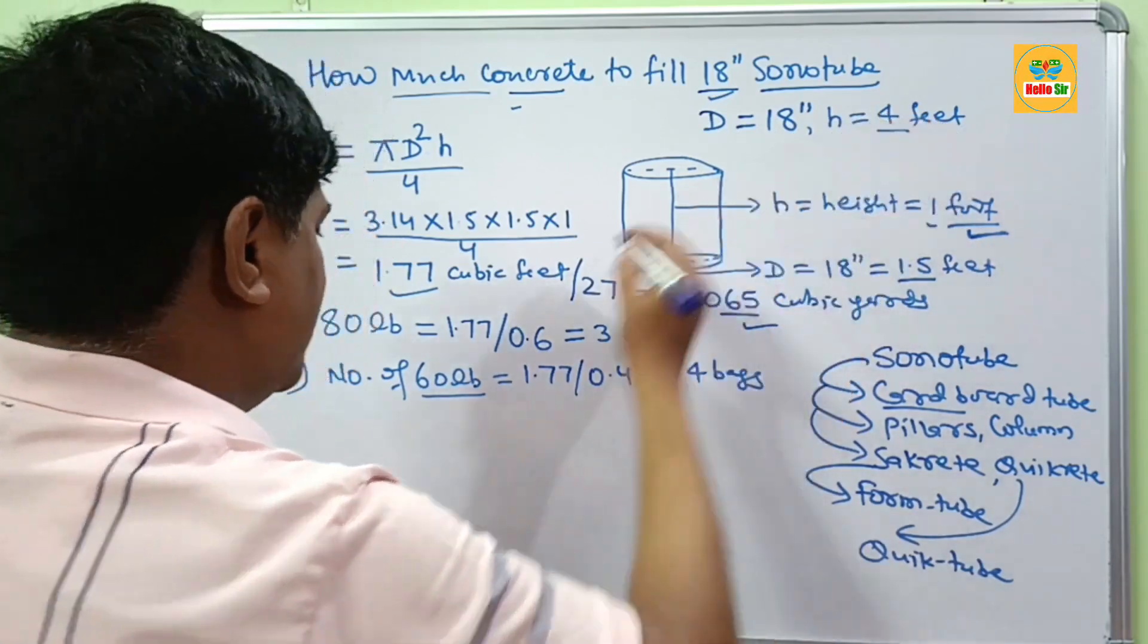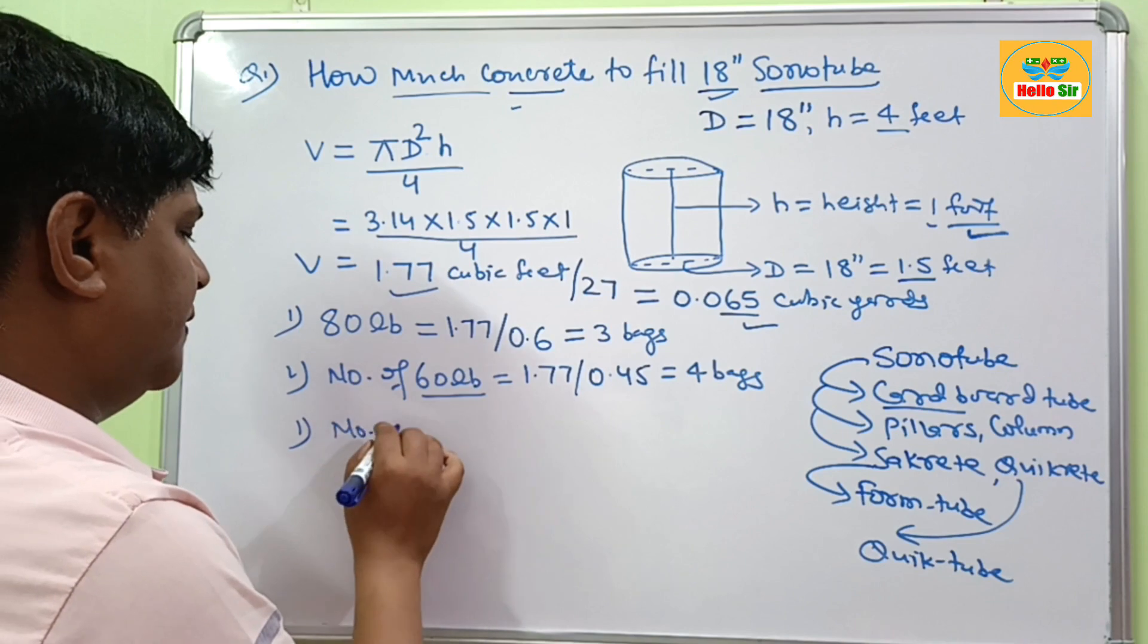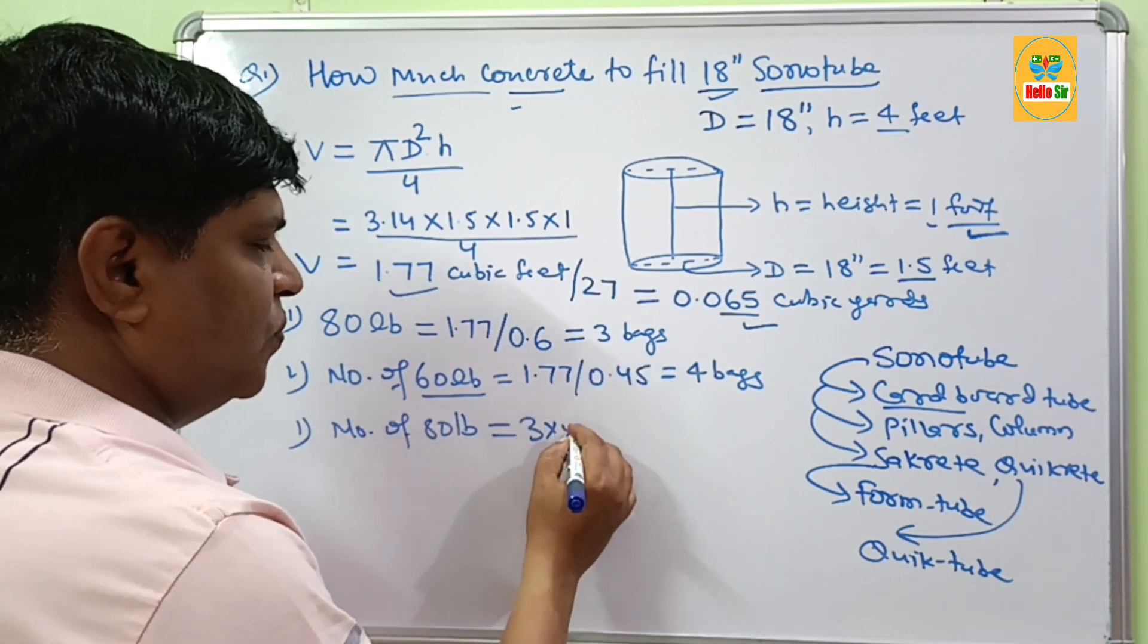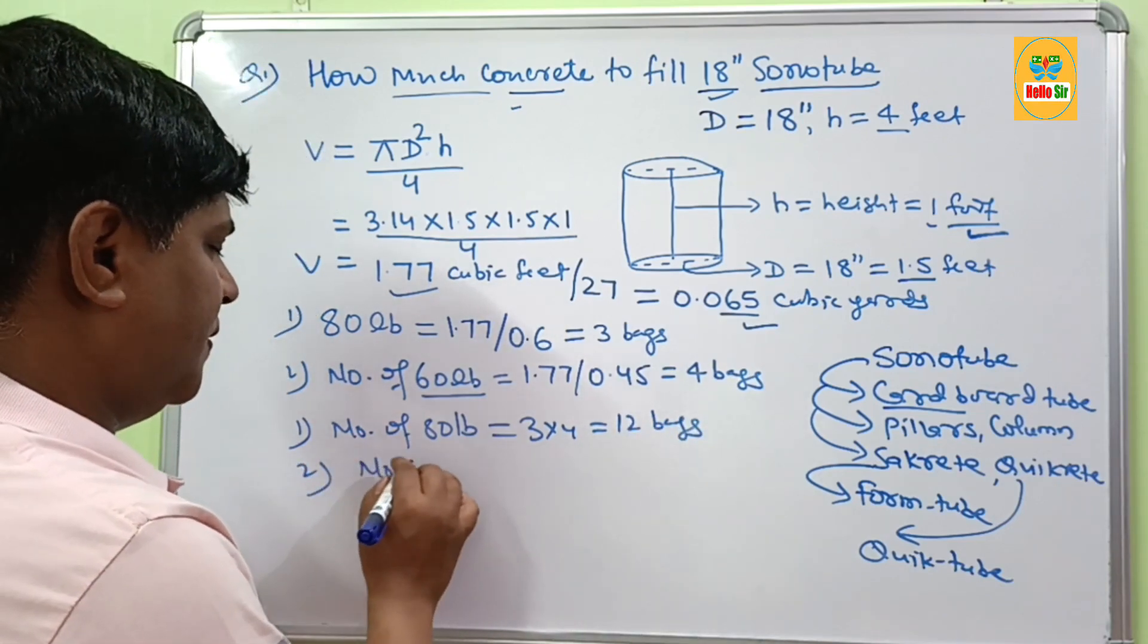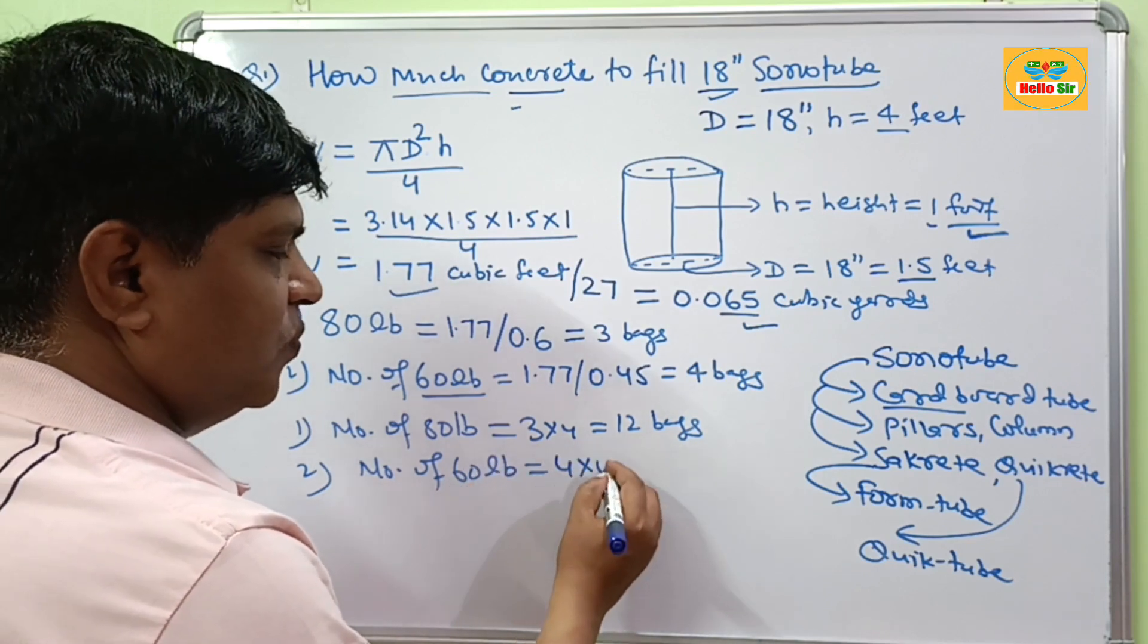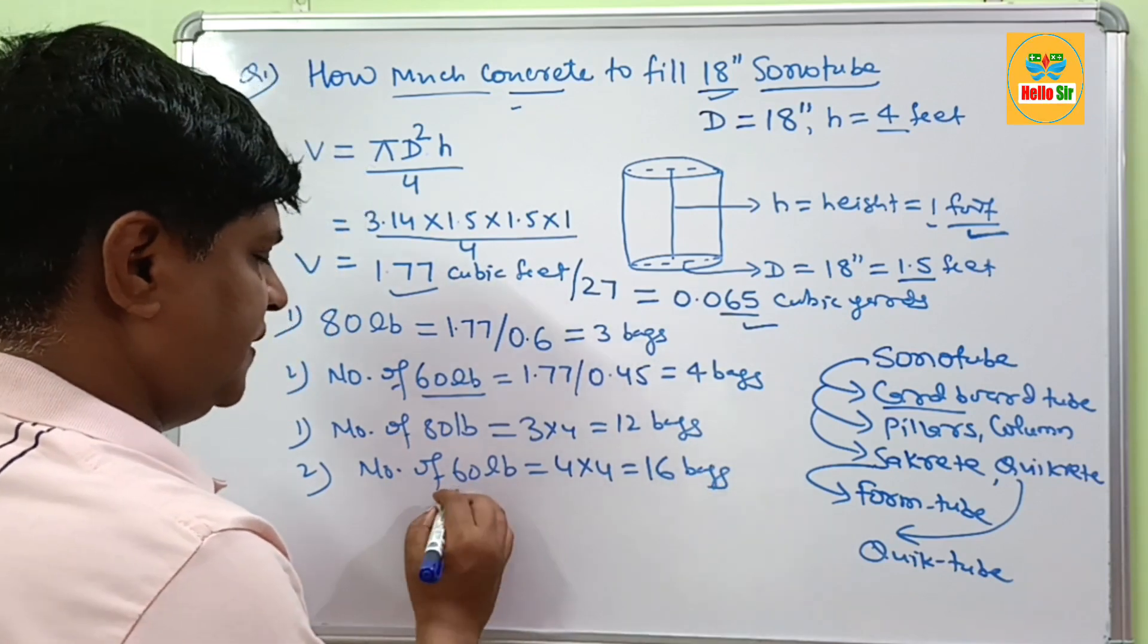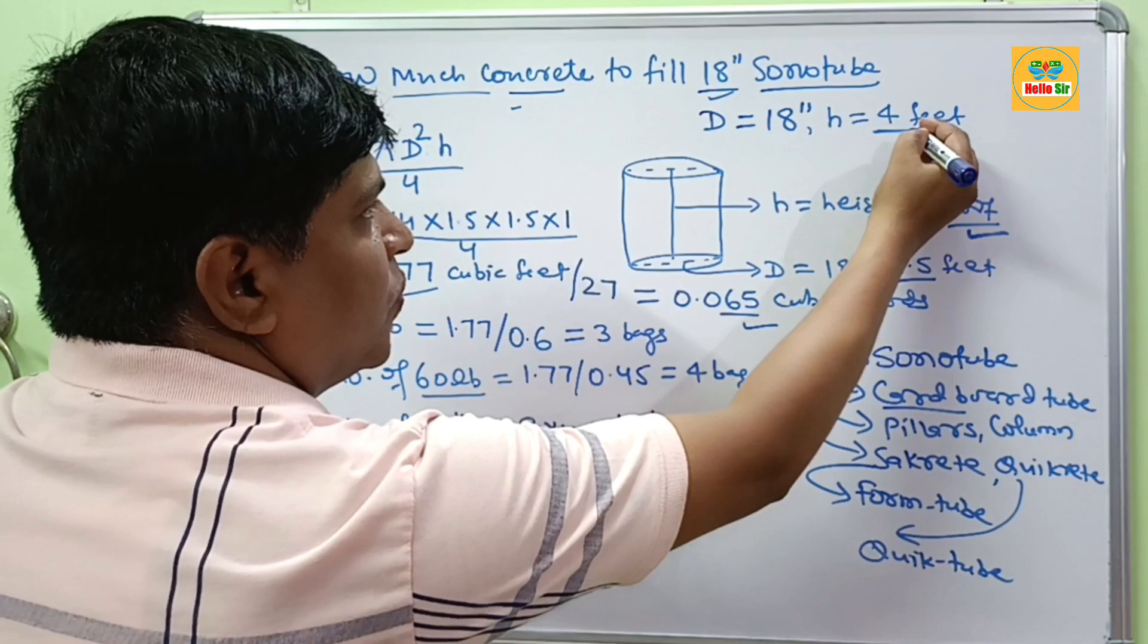And if you want to calculate for 4 feet height, then number of 80 lb is equal to 3 times 4. You need 12 bags of 80 lb bags, and number of 60 lb is equal to 4 times 4, which is equal to 16 bags of 60 lb concrete. You need for the height of 4 feet, 18 inch diameter of sonotubes.